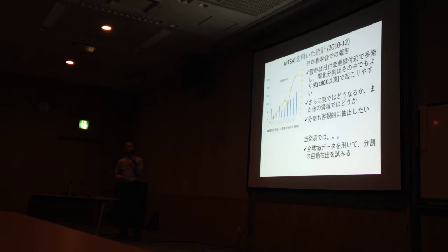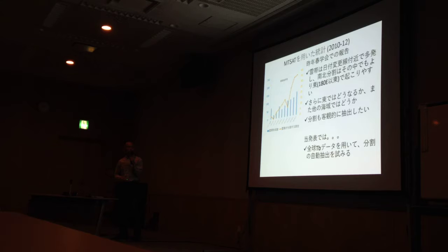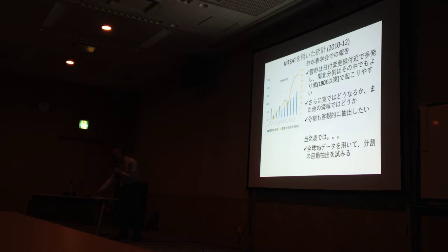分割が、きれいな分割が起こる割合を見ると、特にこの東端のところで高い頻度で分かれているということが分かりました。そこで、さらに東の方や他の海域も気になります。また、去年のところは、雲帯は客観的に見たんですけど、分割は主観的に目で見て判断していましたので、なんとかこれを客観的に出せないかということを考えました。今日は全球のTVを用いて、分割の自動抽出を試みましたので、それをお話しします。